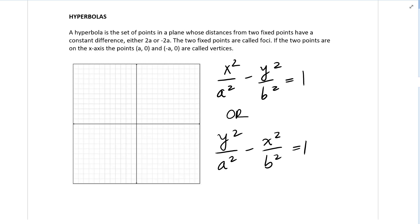The two fixed points are called foci. If the two points are on the x-axis, the points (a,0) and (-a,0) are called vertices.